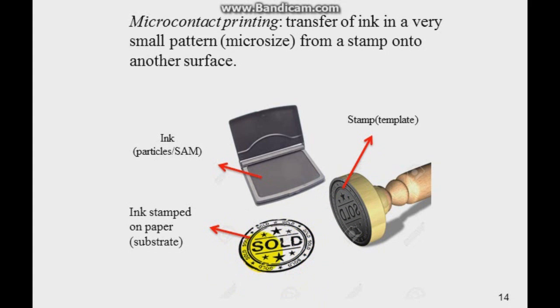Microcontact printing works the exact same way. You have a stamp, or your template, which you can design on your own, and our paper in this case would be our substrate, or our material. The ink would be the particles, or the self-assembled monolayer, the SAM, which can be transferred to our material through the action of the stamp. Hence, as we talked about earlier, we can add a specific pattern on the flat surface of the material that we had earlier.